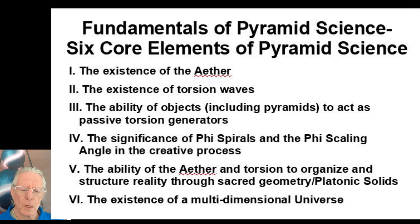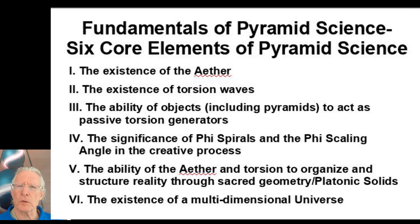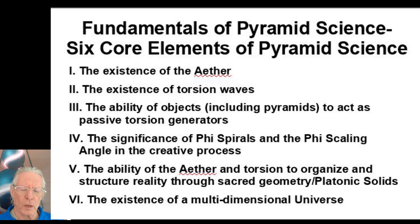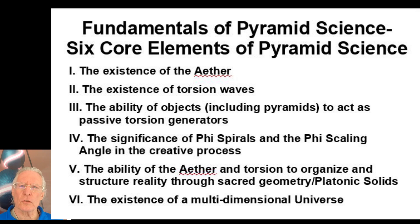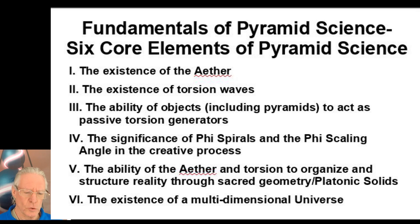To review our six core elements of pyramid science, we previously discussed the existence of the ether and the existence of torsion waves. And in our last episode, we discussed the research of Dan A. Davidson and his book Shape Power. This is a continuation of that discussion about the ability of objects, including pyramids, to act as passive torsion generators.